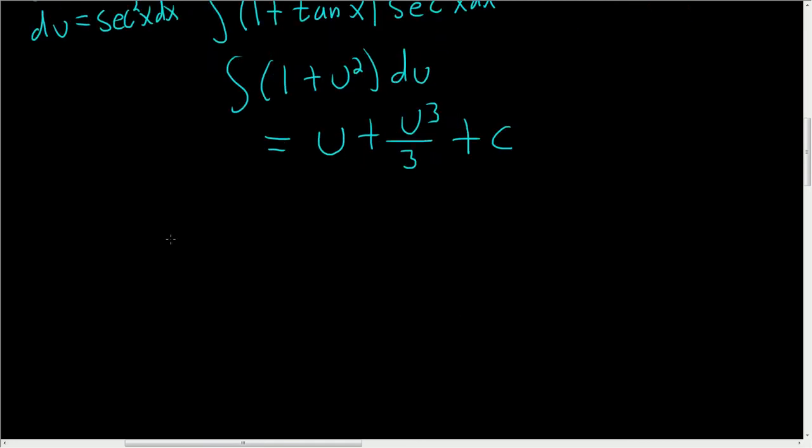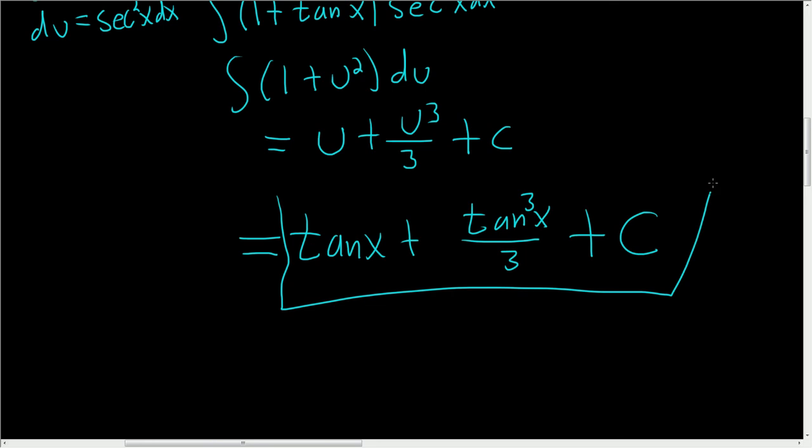So the last step is to replace all of the u's with tangents. We get tangent x plus tangent cubed of x over 3 plus our arbitrary constant C. And that's it.